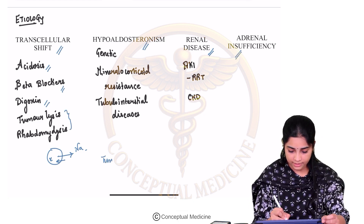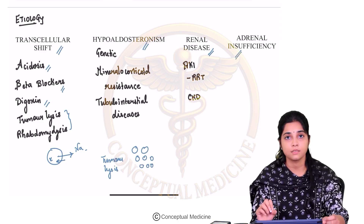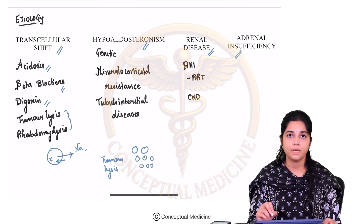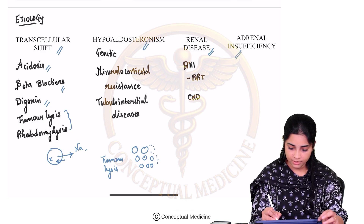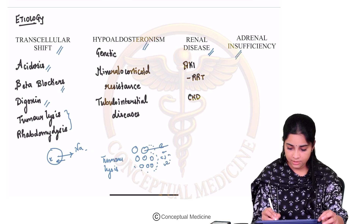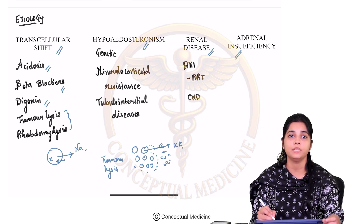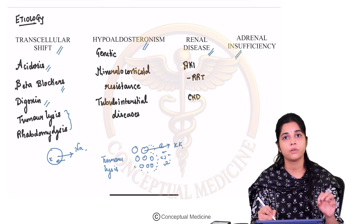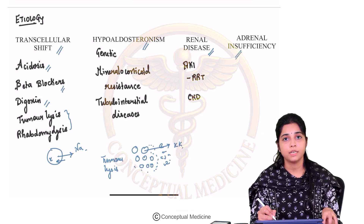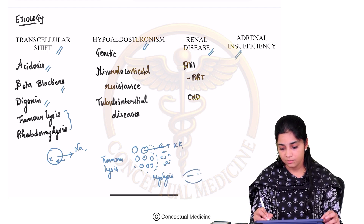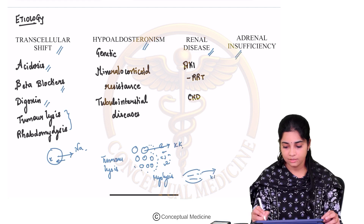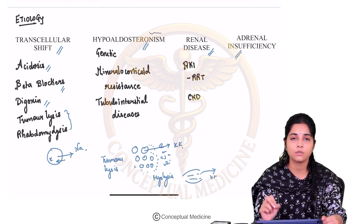Tumor lysis syndrome and rhabdomyolysis also cause hyperkalemia. In tumor lysis syndrome, there is a large burden of tumor — more commonly associated with hematological malignancies, but also seen with solid organ malignancies. When the tumor burden is very high and the cells begin to lyse, intracellular potassium starts moving outside, resulting in hyperkalemia. In rhabdomyolysis, muscle breakdown occurs and potassium is released outside.